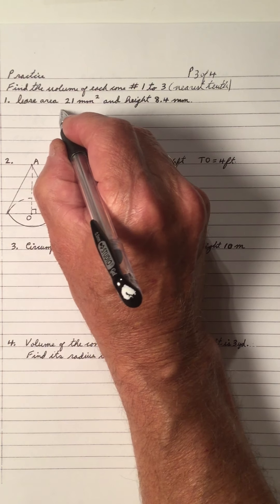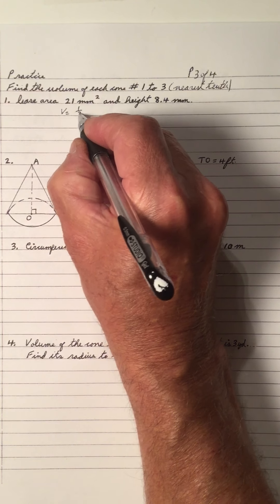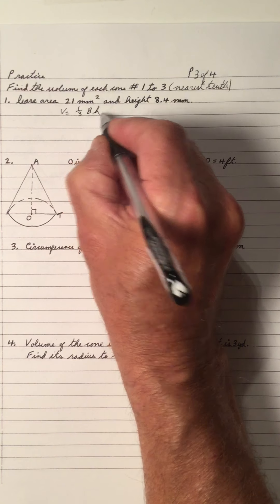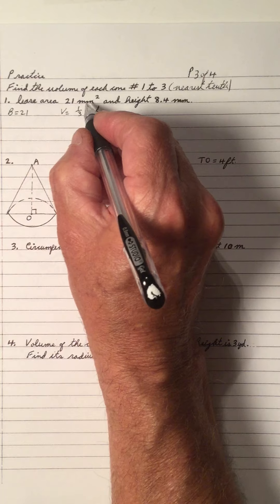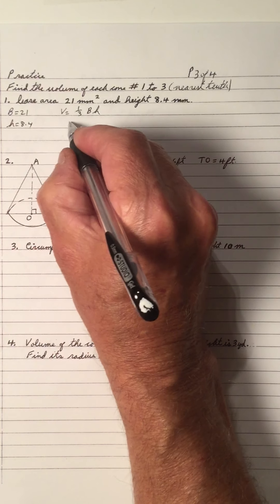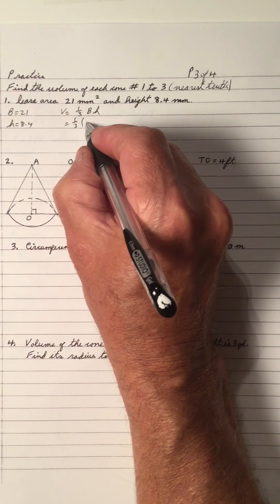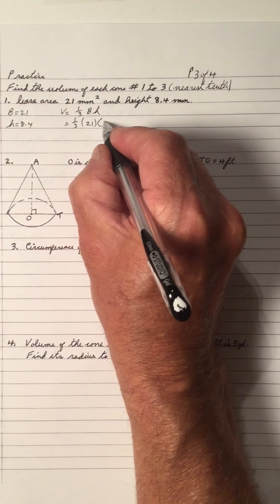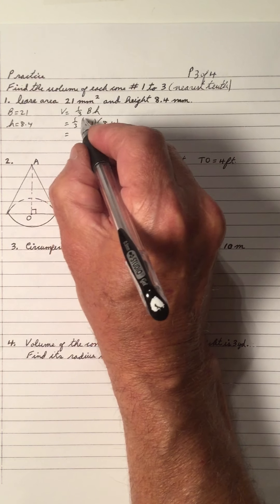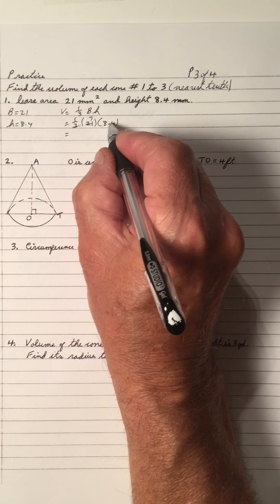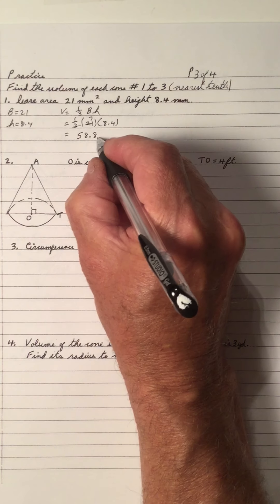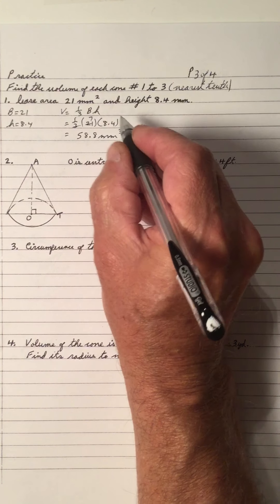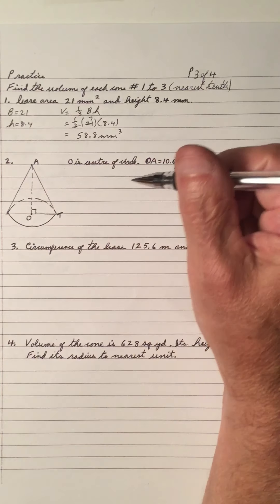For number 1, we have a cone, so it's one-third the base area times the height. Since we have a base area already, which is 21 millimeters squared, and we have a height of 8.4, that means we go one-third times base area 21 times the height of 8.4. One-third of 21 is 7, so 7 times 8.4 is 58.8 millimeters cubed. The rounding is already at the tenth place, so we don't have to round it.